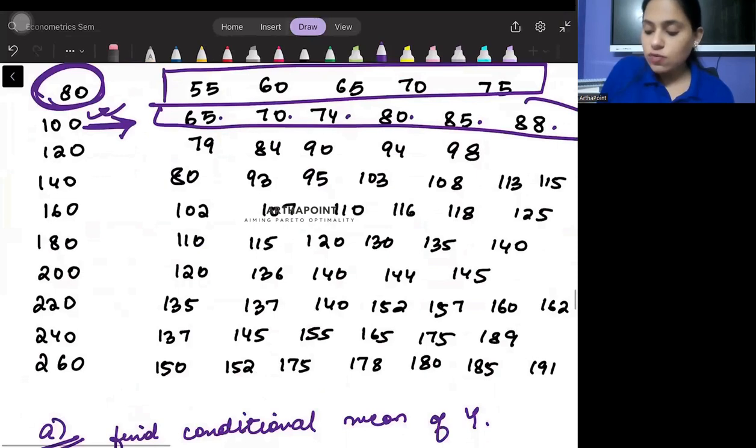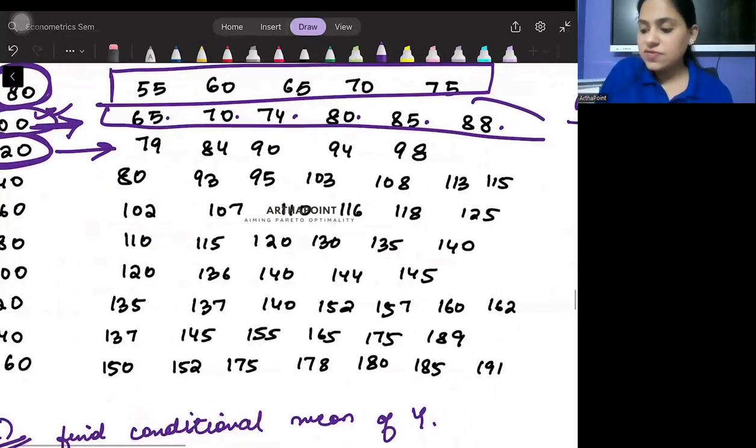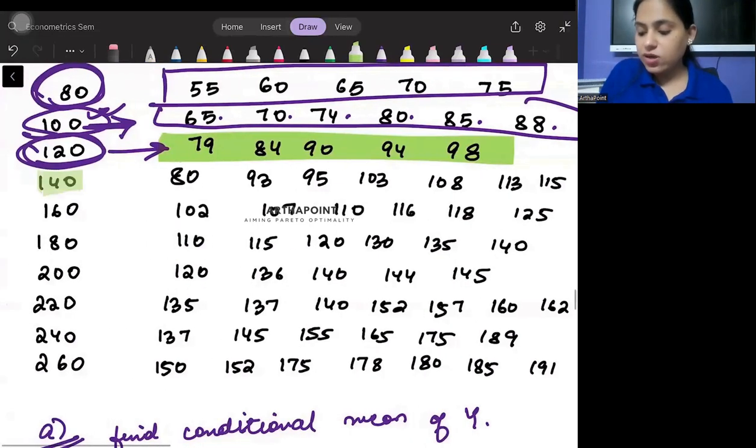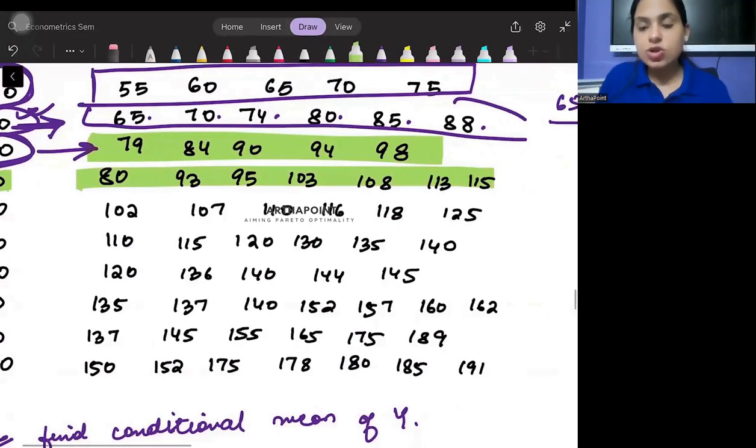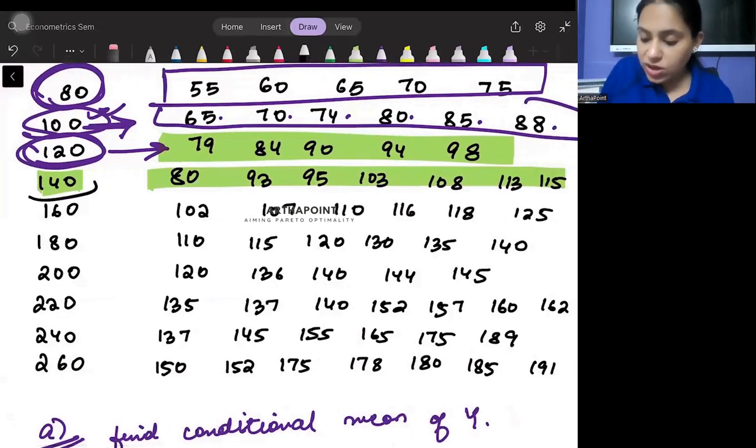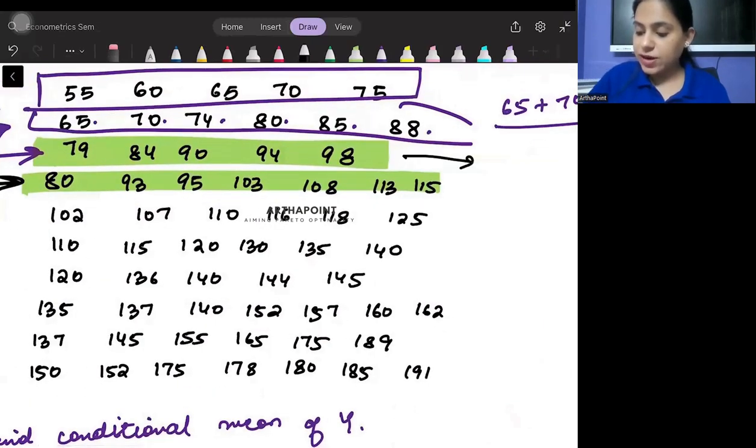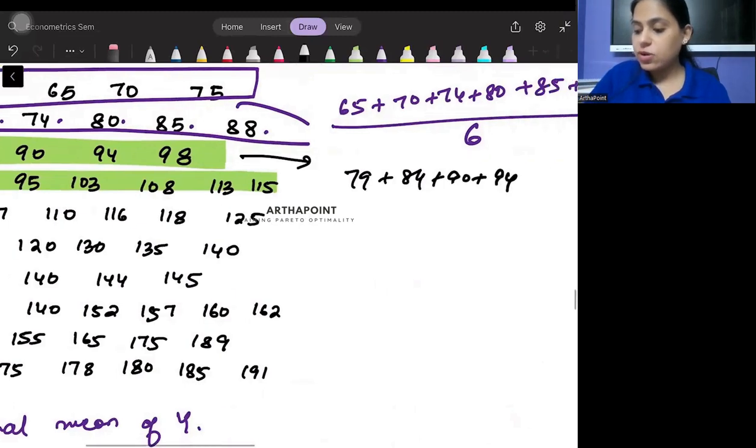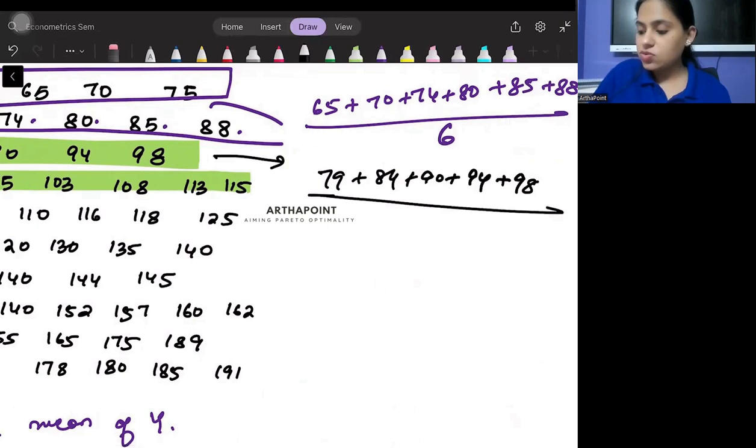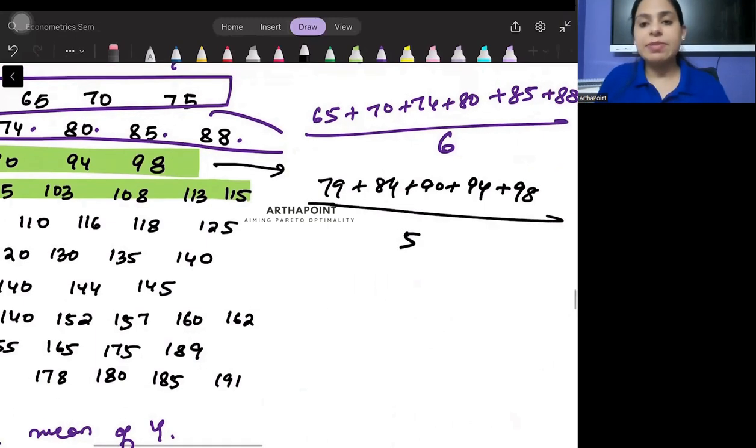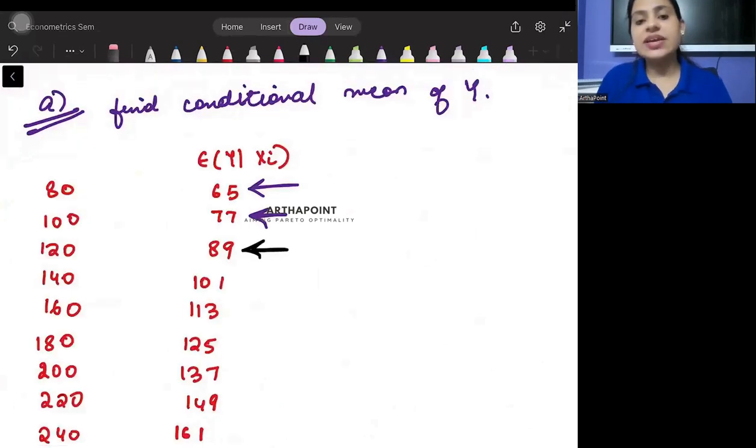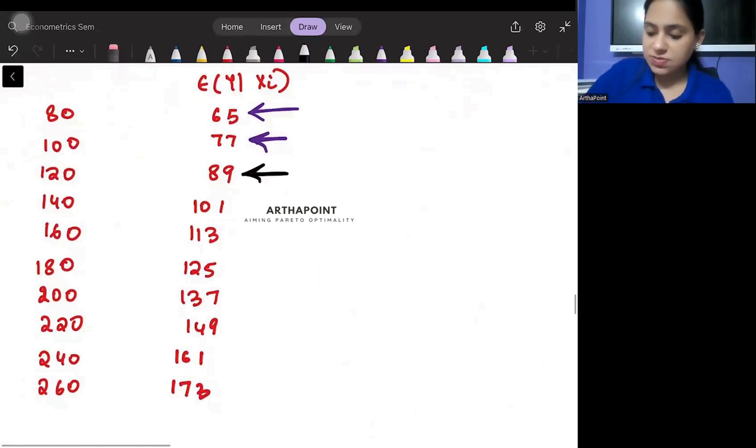Similarly for the third one, fourth one and so on. You will hold this at 120 and find all the expected values. Then you will hold it at 140 and find the expected values. Whenever you need to find expected value, you will find the mean for that row. For example, if here I have to find the mean, it will be 79 plus 84 plus 90 plus 94 plus 98 divided by 5, and you will get the third one as 89 and so on. That's the first part.